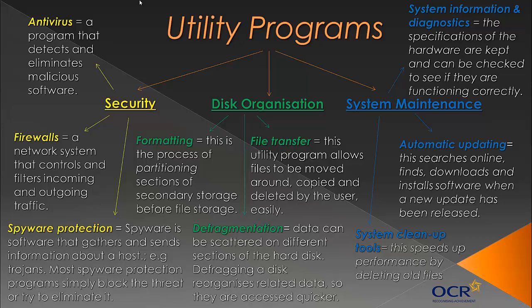Finally on this slide, system information and diagnostics. System information programs keep the specifications of your hardware — if you go to My Computer and Properties, it shows your clock speed, how much RAM you have, your hard drive capacity, all stored in that simple program. Diagnostic tools work like a doctor diagnosing you — they check if whatever you're looking at is functioning correctly, and if it isn't, they might even suggest how to fix it, which is very useful.